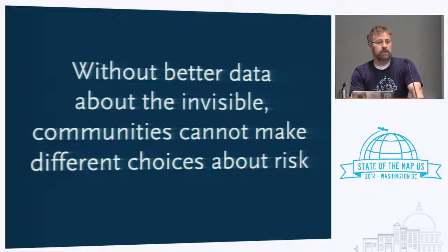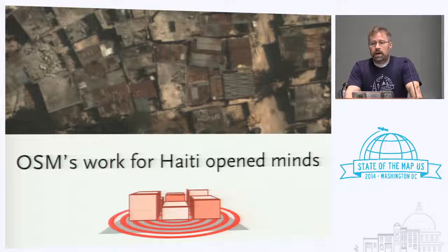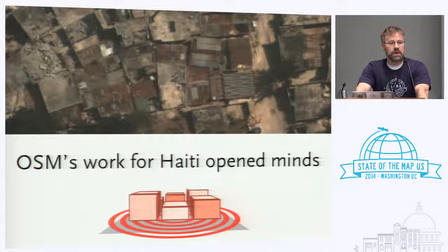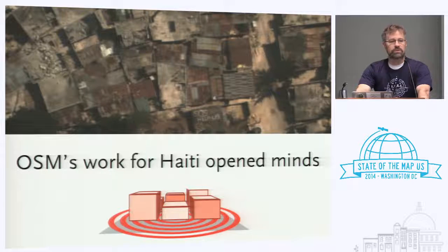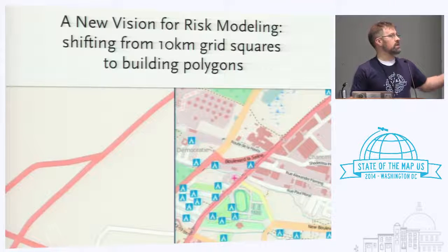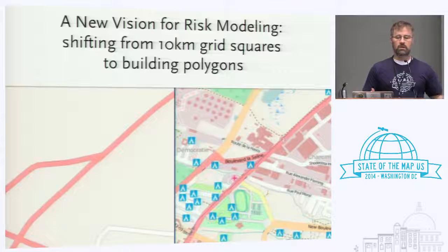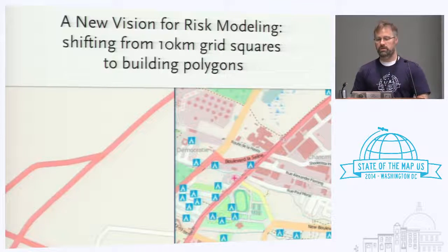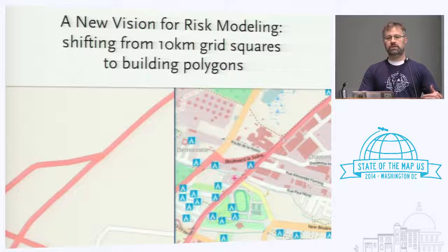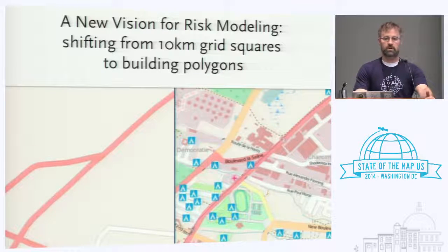So in order to help our communities, we really need better data. This is where open data and OpenStreetMap come in. How many of you were part of the effort to map Haiti? The process that catalyzed changed minds. Quite a number of people began to see OpenStreetMap as the potential to get beyond the 10-kilometer grid square down to building polygons, where we can work with neighborhoods, communities, and individual people on the ground to understand their particular risks.